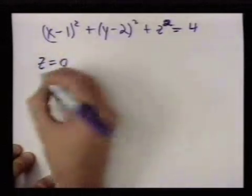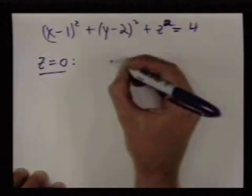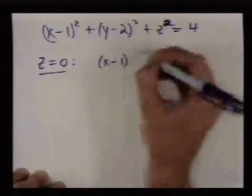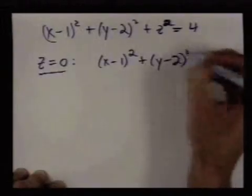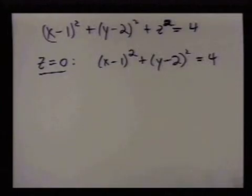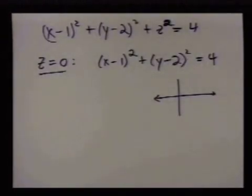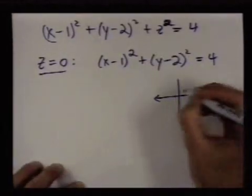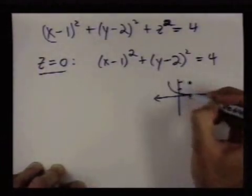So if I start out by seeing what happens when I hold z equal to 0, this equation turns into x minus 1 squared plus y minus 2 squared equals 4. So on the xy plane, this is nothing other than the circle with center 1, 2, and radius 2. So here's a drawing of that.